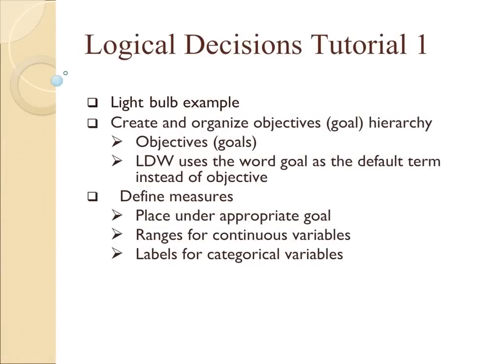This is a tutorial for Logical Decisions, the first one in a series. We're going to use a lightbulb example, and the focus will be to create and organize an objectives hierarchy. Logical Decisions uses the word 'goal' instead of 'objectives'. We will also define measures, place them under the appropriate goal, and deal with two types of variables: one continuous, and the other categorical, which Logical Decisions calls 'label'.